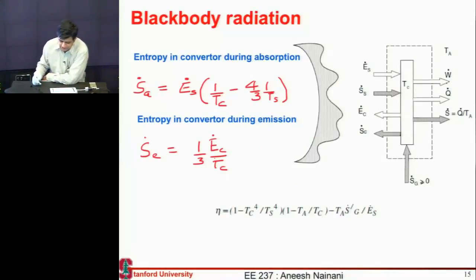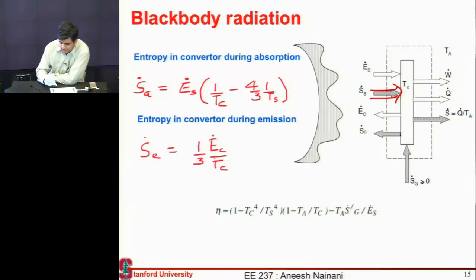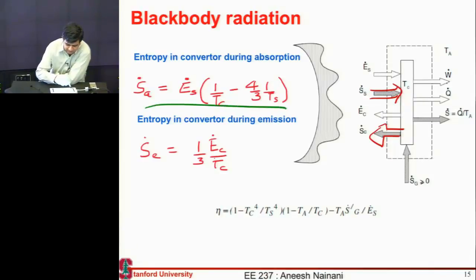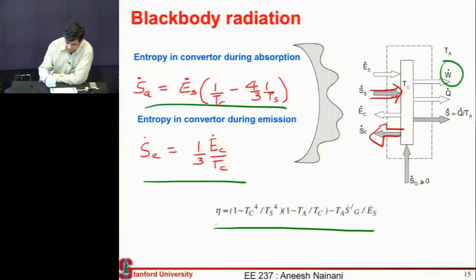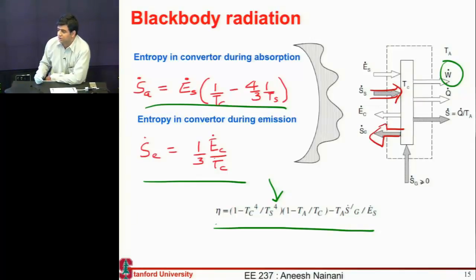The reason for this is embedded in the different entropy terms. You have an entropy associated with the incoming light, but when this converter or cell heats up, it emits out this entropy. There are additional entropy terms associated with the absorption and emission process. Accounting for all these entropy terms and how much can be converted into work, you get this relationship — the black body limit for solar energy radiation.